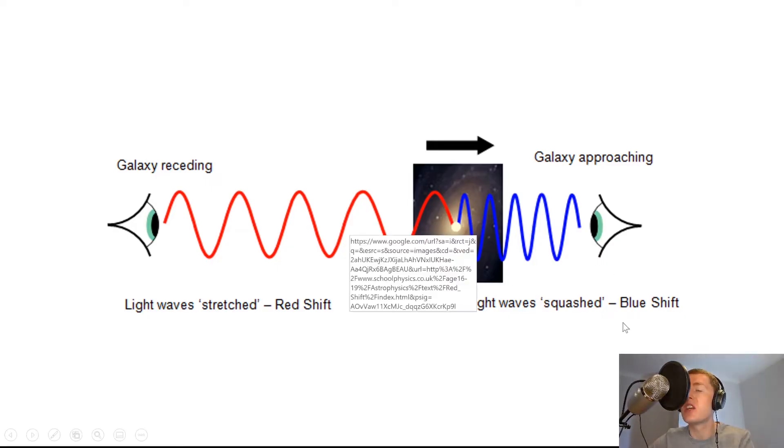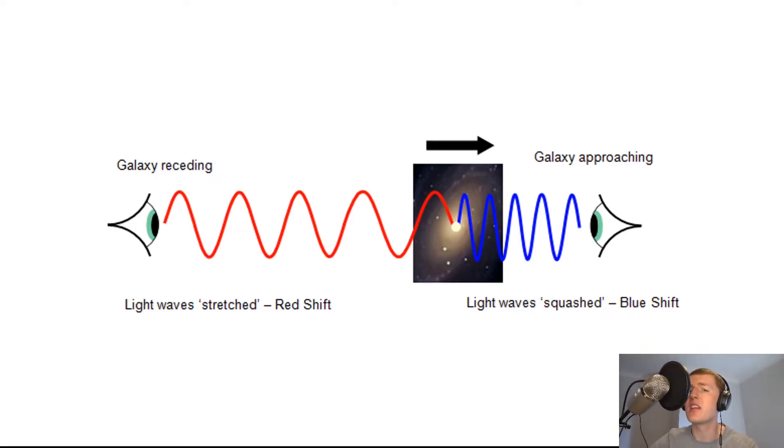And because we're decreasing in wavelength, one of the lowest wavelengths in our visible spectrum is blue light. So the light would shift towards the blue end of the spectrum if we were looking at the absorption lines in the spectra. And again, it's not necessarily that the light is becoming blue. It's just shifting towards that end of the spectrum.